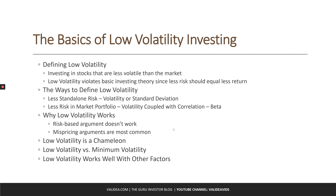The second measure of low volatility is beta. Beta is different from standard deviation, and it takes into account the relationship between a stock's movement and the movement of the market as a whole. It is looking at the risk a stock adds to an already diversified portfolio. If a stock zigs when the market zags, it can have a high standard deviation, but a lower beta.